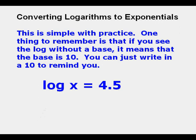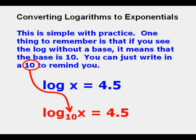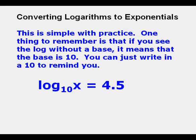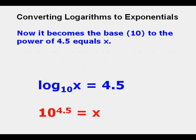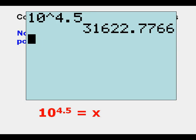Now this is simple with practice. One thing to remember is if you see the log without a base, it just means that that base is 10. You can just write in a 10 to remind you of that. Now it becomes the base 10 to the power of 4.5 equals x. And here we see it calculated at 31,623.